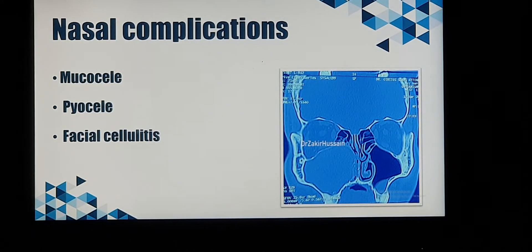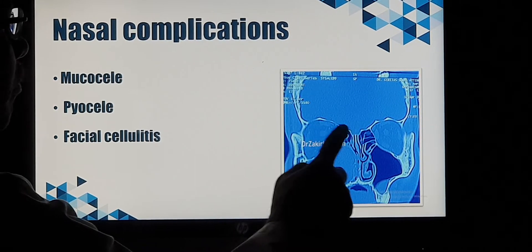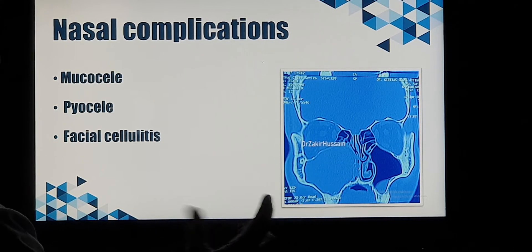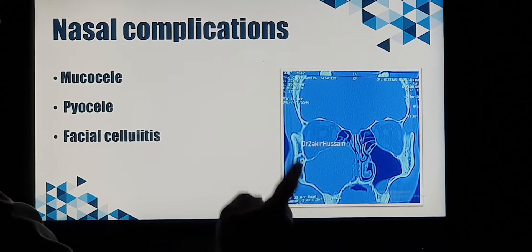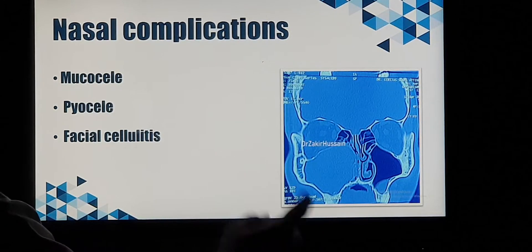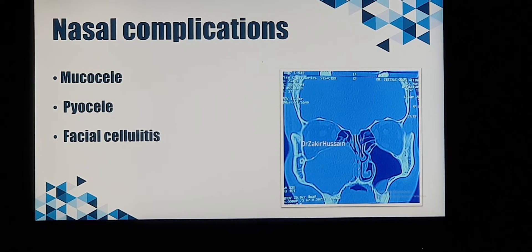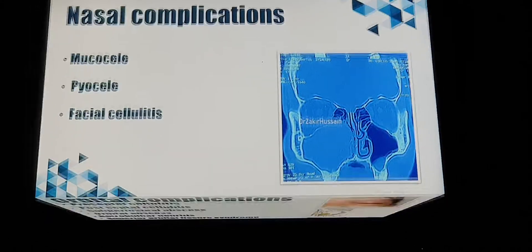Two or three more nasal complications: one is a mucocele. The maxillary sinus opening gets blocked and you have pent-up mucous secretion in the sinus, or the mucous glands in the maxillary sinus get blocked and mucous accumulates inside — this is termed a mucocele. If there is secondary bacterial infection in a mucocele, that is a pyocele. Another complication is that the patient may have sinusitis with associated facial swelling, which is called facial cellulitis.